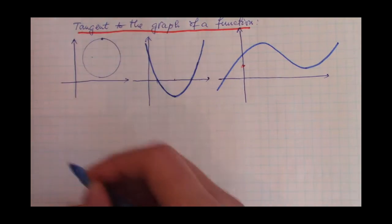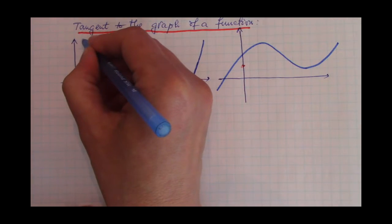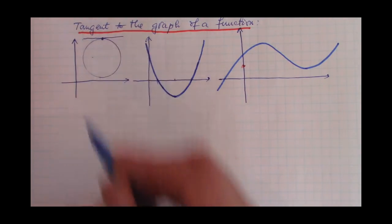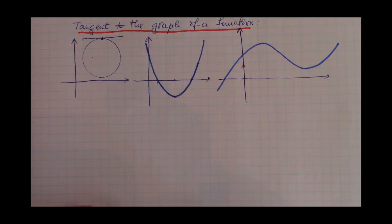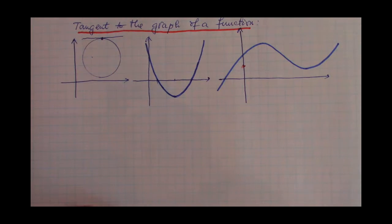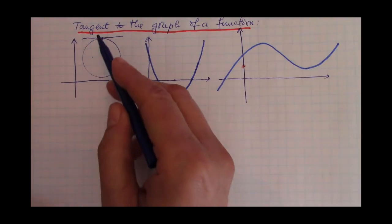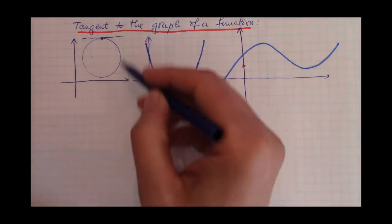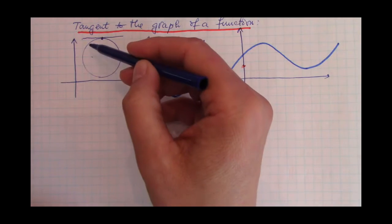They'll probably say: we take a point on a circle and the tangent is that one line that intersects the circle at one point. That's okay up to a certain point, but in this video we are going to talk about the tangent to the graph of a function — and a circle is not a function.